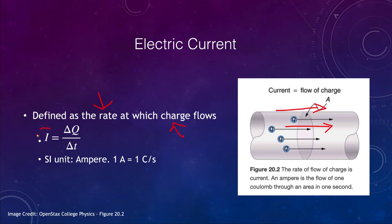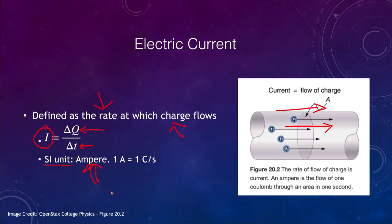The current uses the capital letter I, which is defined as the change in charge divided by the change in time. It's a rate much like velocity was a change in distance divided by a change in time — so it measures how fast the charge is moving. The SI unit for this is the ampere: one ampere, or one amp, equals one coulomb per second, meaning one coulomb of charge flowing through a specific area in one second.